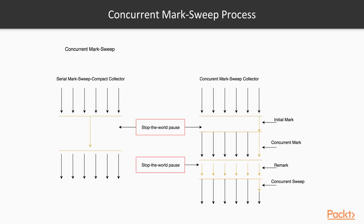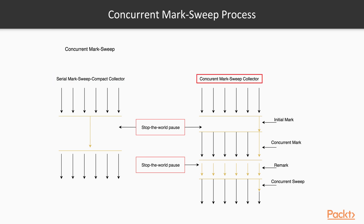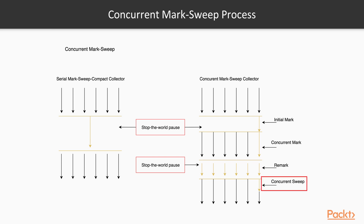Let's see how concurrent mark sweep works. CMS has different phases. The first is the serial mark-sweep-compact collector, and the other is the concurrent mark sweep collector — we want to be in the concurrent mode. When everything is working properly, garbage collection is done concurrently. The steps are: initial mark (marking objects no longer referenced), then concurrent mark, then remark, and finally concurrent sweep — which cleans up unreferenced objects concurrently.